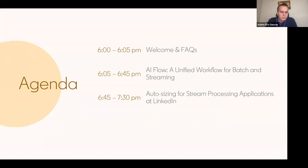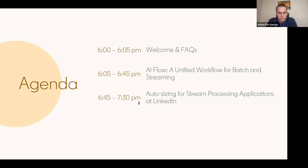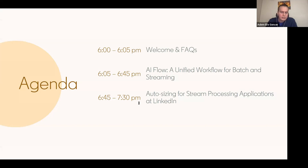We have two exciting talks for you today. The first talk will be given by Beckett from Alibaba, introducing a project called AI Flow, which enables users to define and run workflows containing both batch and stream jobs, giving users a global view and overall control of their applications. After that, Ray and Ziting from LinkedIn will talk about autosizing for stream processing applications at LinkedIn — a system that dynamically controls application resource sizing while accounting for diverse functionalities, input load variations, and remote service dependencies to maximize cluster utilization and minimize cost.